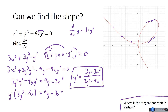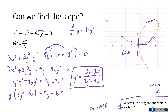AP exams often ask: where is the tangent line horizontal and where is it vertical? Horizontal means slope equals zero — that happens when the numerator is zero, i.e., when 3y=3x², or y=x². Vertical means slope is undefined — that's when the denominator is zero, i.e., when 3y²=9x. You can see on the graph there are spots for both, and at (0,0) you actually get 0/0, which is a special case where both occur.